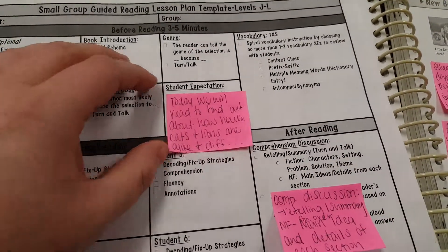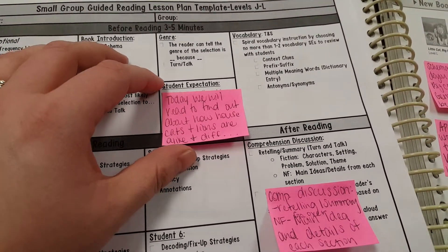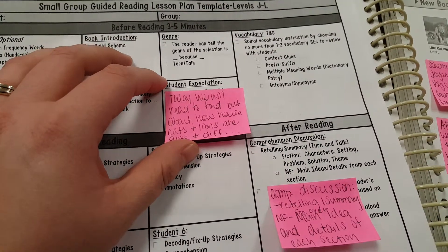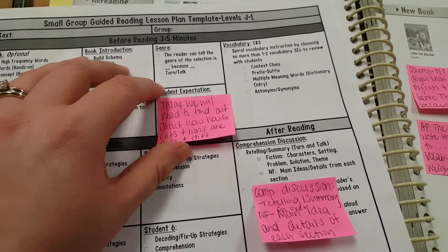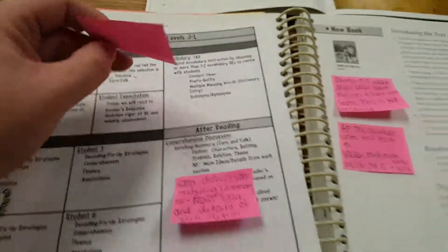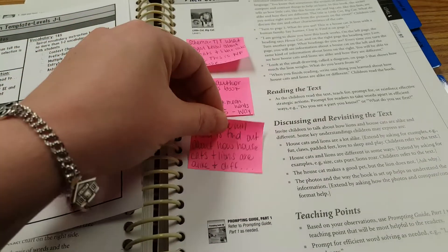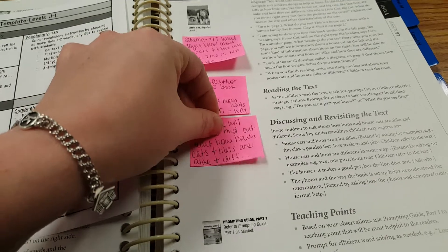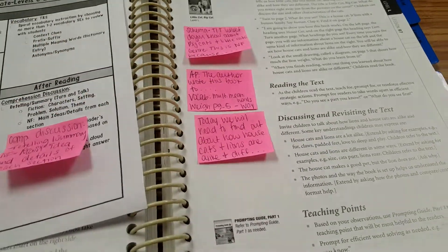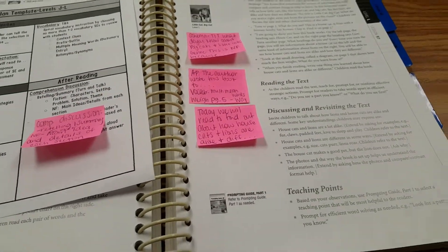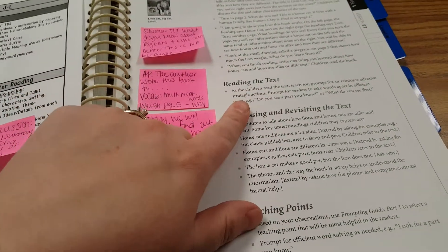Then I do the student expectations. Today we'll read to find out about how cats and lions are different and are alike. I set my purpose for reading and then I have the students read the text.